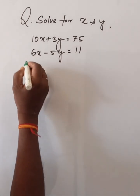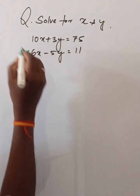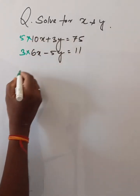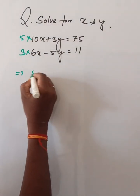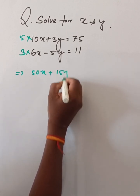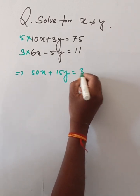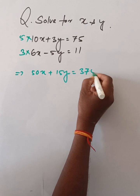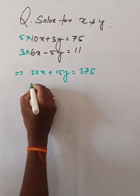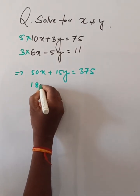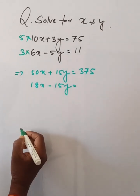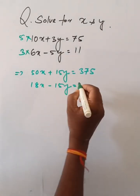Balancing the equations: 3 is multiplying the first equation and 5 is on the second. This gives 50x plus 15y is equal to 375. Again, 18x minus 15y is equal to 33.